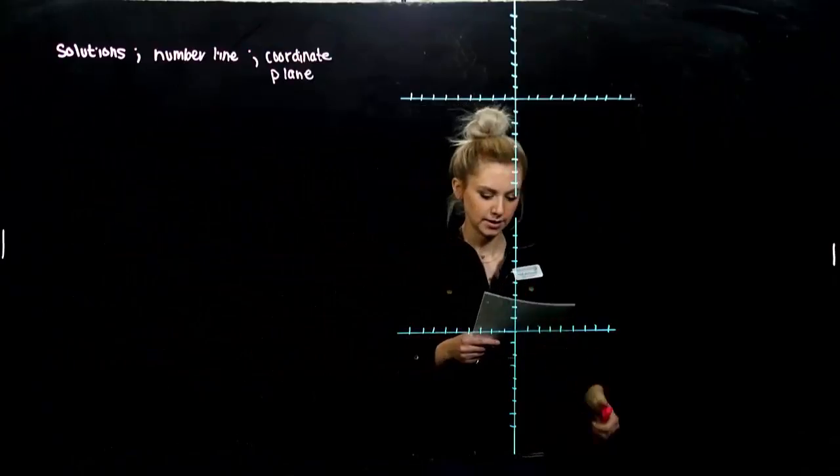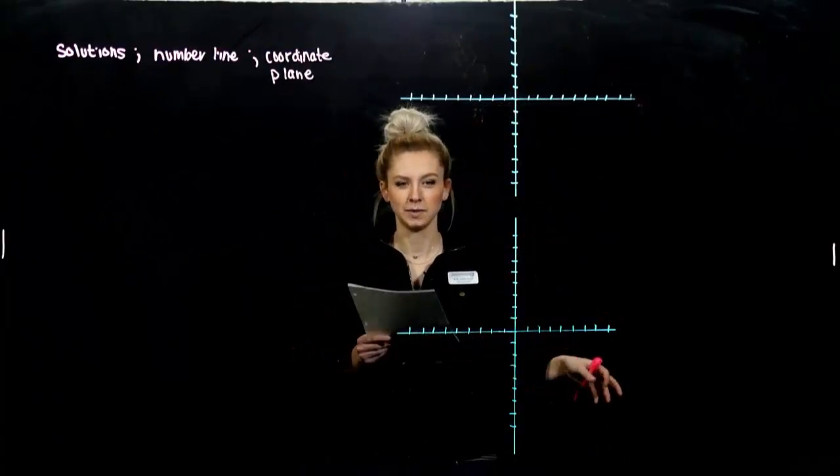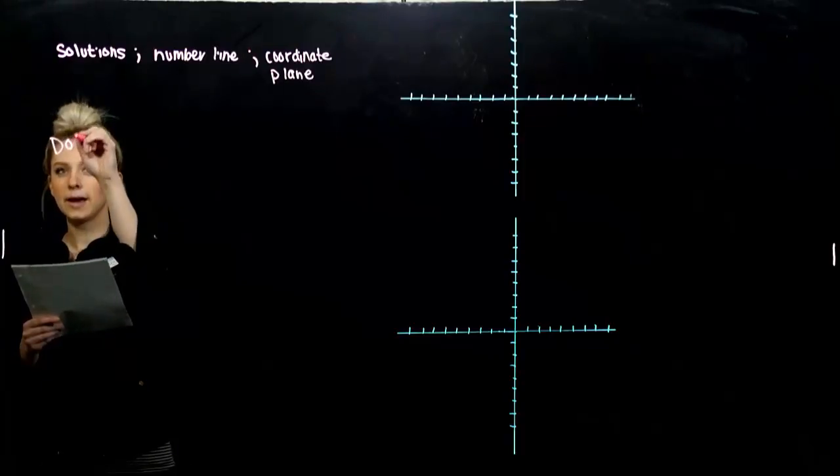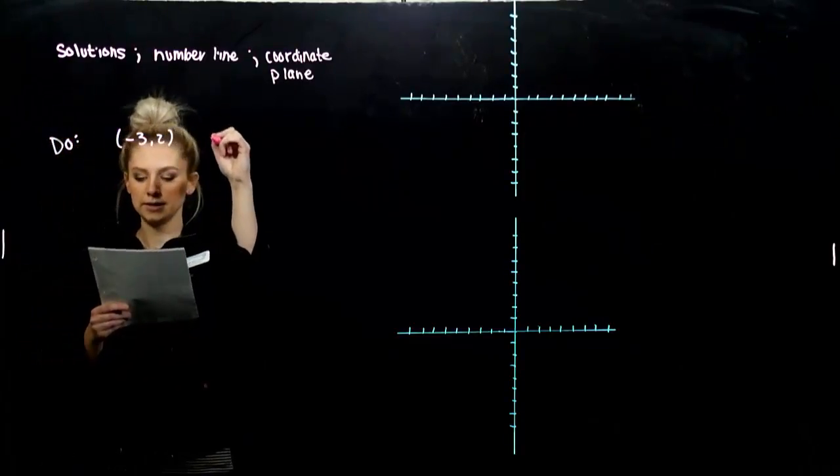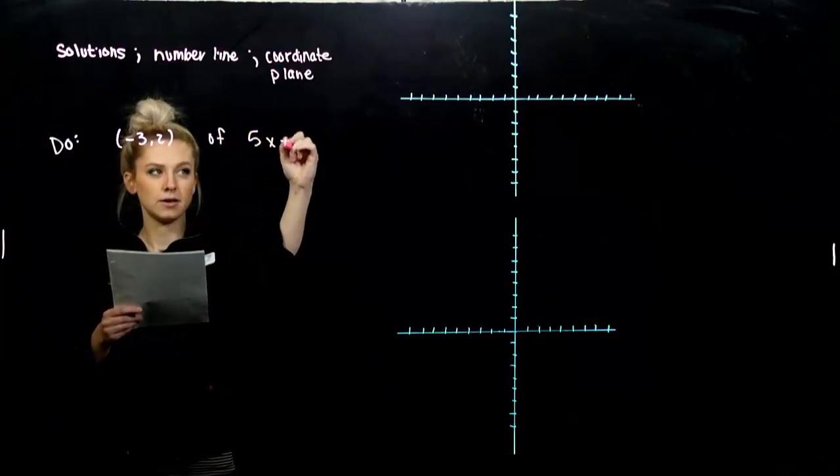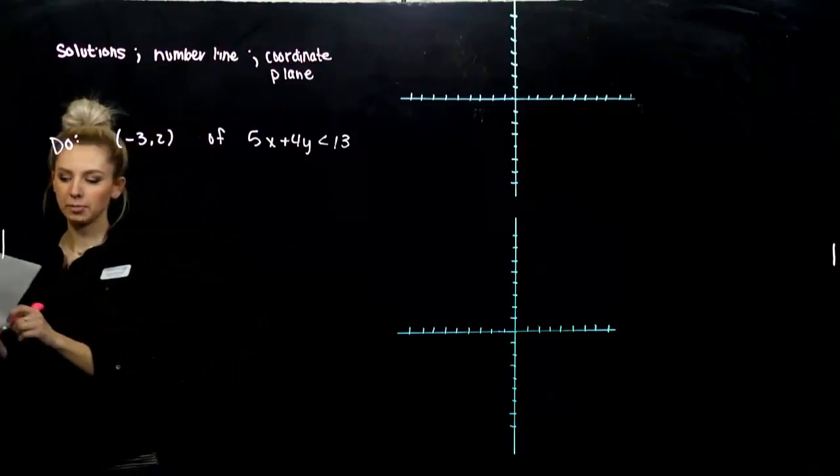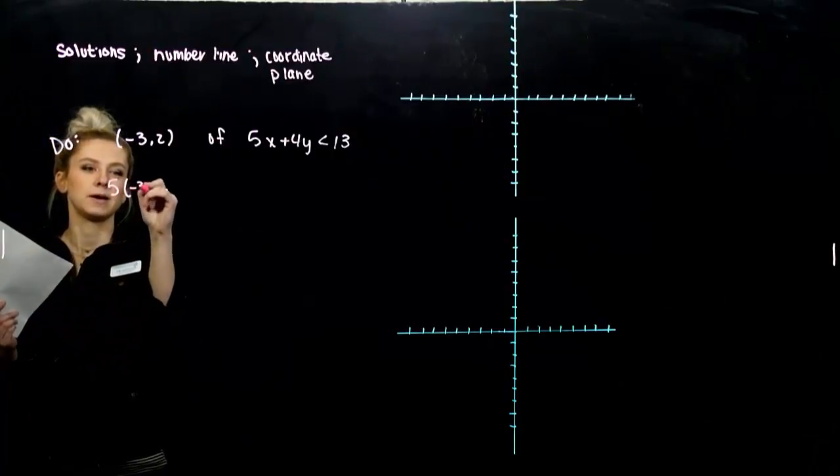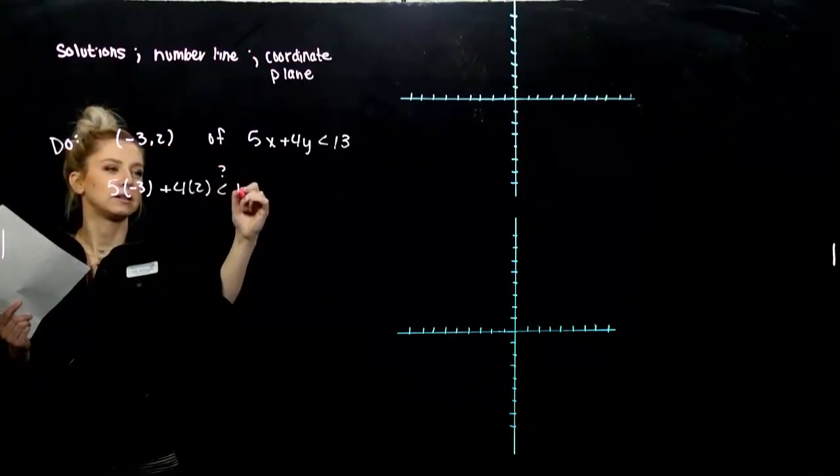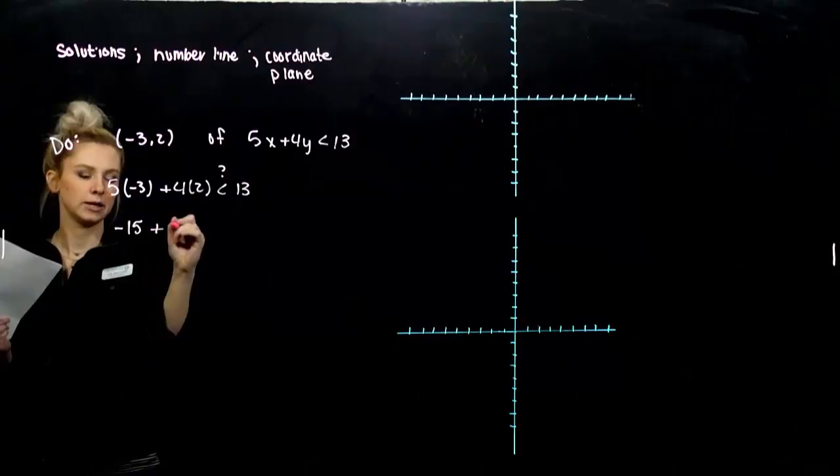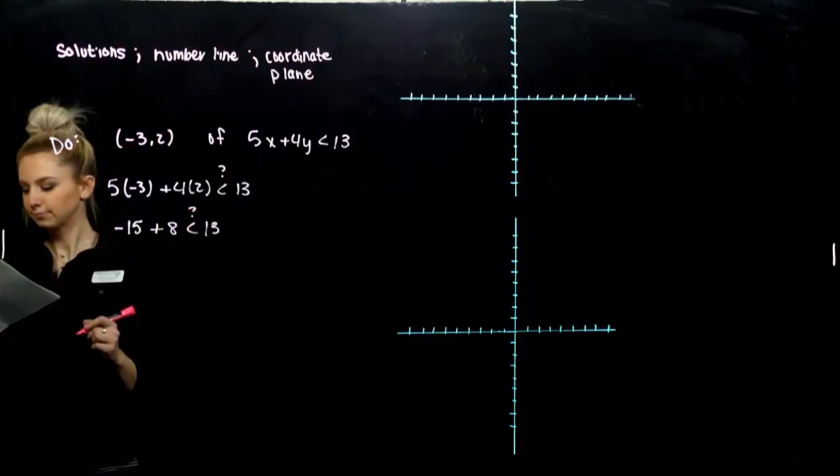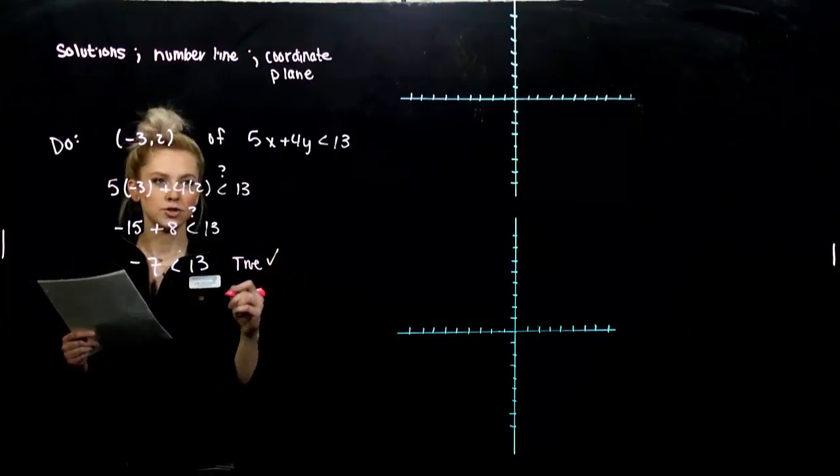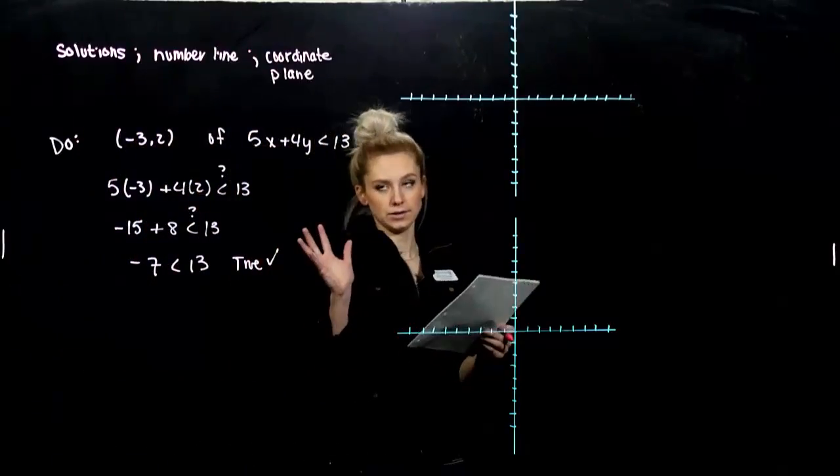We just want to warm ourselves up and determine whether some points are a solution to an inequality. So again, just making sure we understand the concept of what makes it true, what makes it false. The first one we want to look at, we want to determine whether this point is a solution of 5x plus 4y less than 13. So when I plug in those values for x and y, does it satisfy the inequality? Does it make it true? So 5 times minus 3 plus 4 times 2, is that really less than 13? So I've got minus 15 plus 8 less than 13. Is it true? Negative 7 is always, well a negative is always less than a positive. So yeah, it's true. That point is one of these solutions to that inequality.